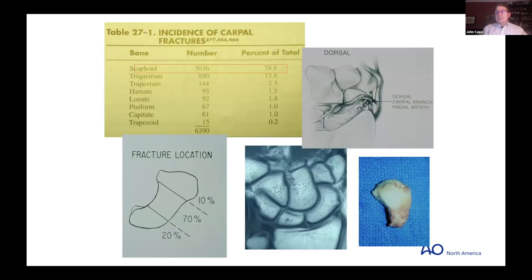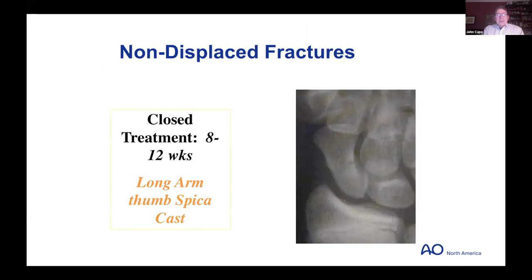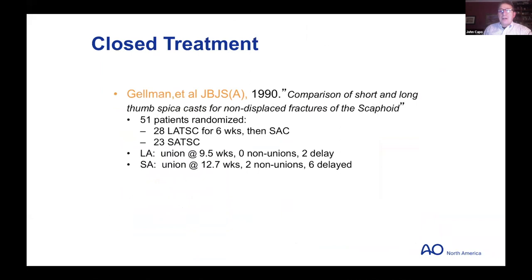For a waist and slightly distal fracture, a short arm thumb spike may be appropriate, but as they become more proximal it's a different animal — even a proximal third is more problematic and may require more aggressive treatment. For acute fracture treatment, I put them in a short arm thumb spike and add a Munster so they can't rotate. I assess the knucklehead factor — looking the patient in the eye to assess compliance. I usually immobilize the thumb.